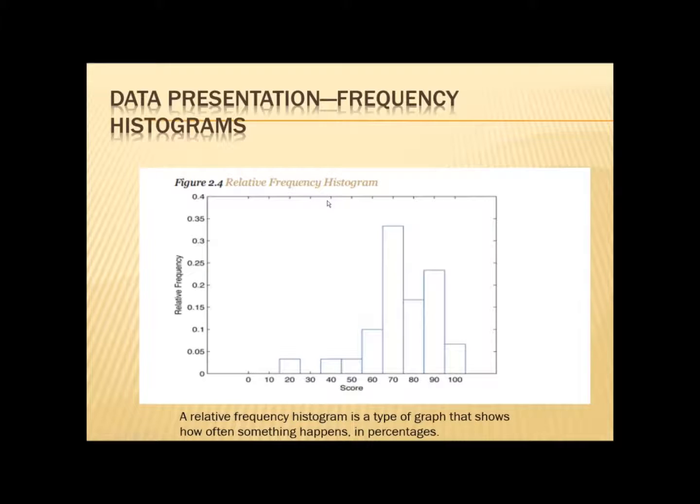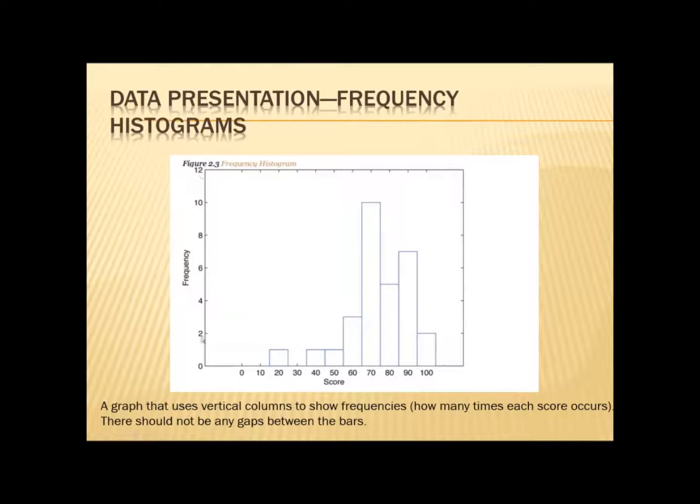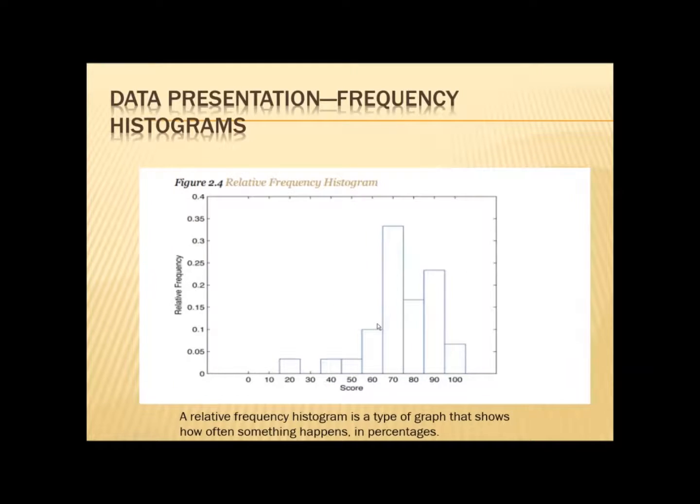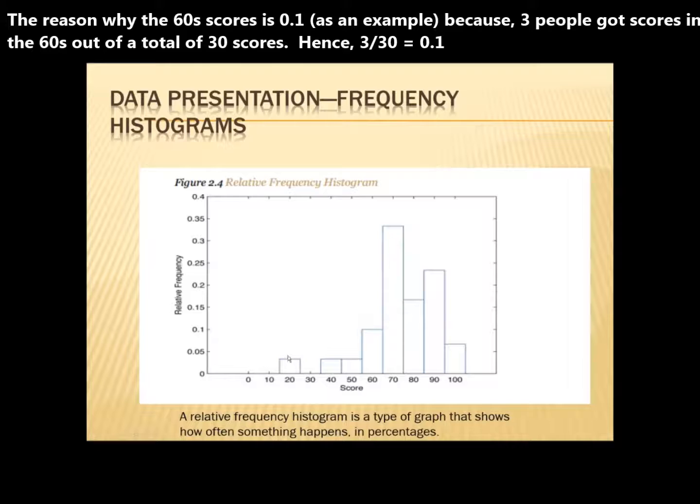These frequencies are gross numbers. Now you want to find out how to get relative frequencies. For example, you would add all the scores in the 10s, 50s, 60s, 70s, etc., and then divide each score by that total number.